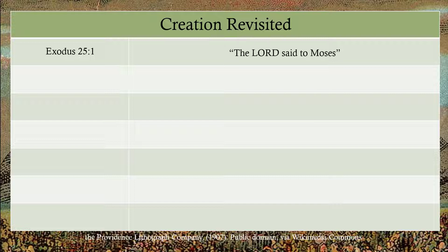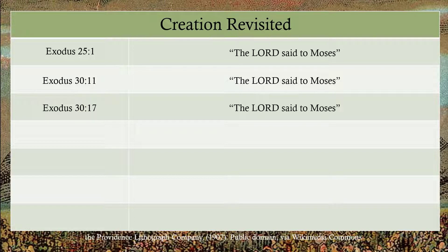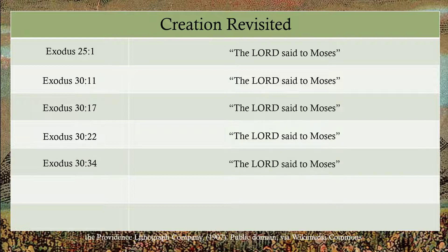The reason I say 'only' is that in the tabernacle instructions he could have easily put the phrase in more, but it's exactly seven times — which means pay attention to what's happening. Exodus 25:1 kicks everything off. Then in Exodus 30 you get a whole bunch of them: the Lord said to Moses at 30:11, 30:17, 30:22, 30:34, then Exodus 31:1. They're all clustered together. It's just like Genesis. How does God create the world? By speaking. And God speaks into existence the place where he's going to dwell with his people.